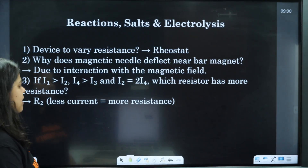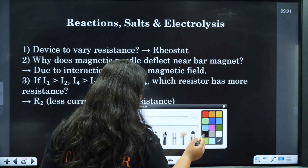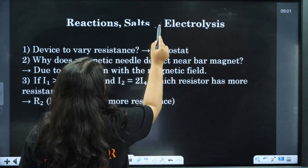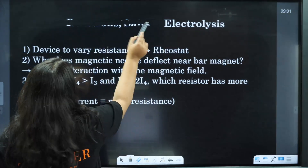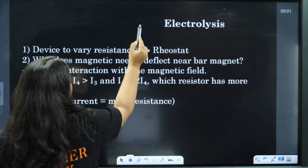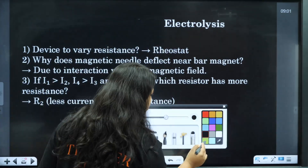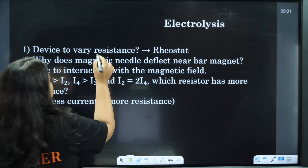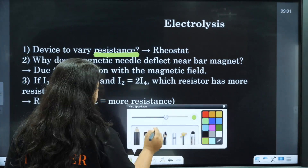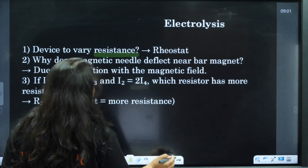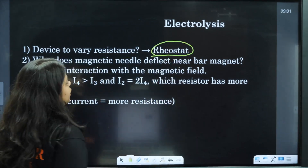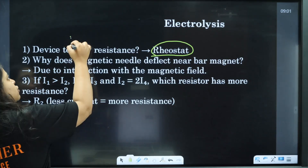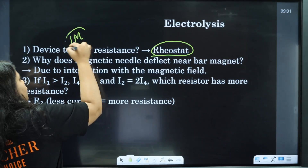Now moving to physics questions. The device that varies resistance is called a rheostat. This is a one-mark question in physics.